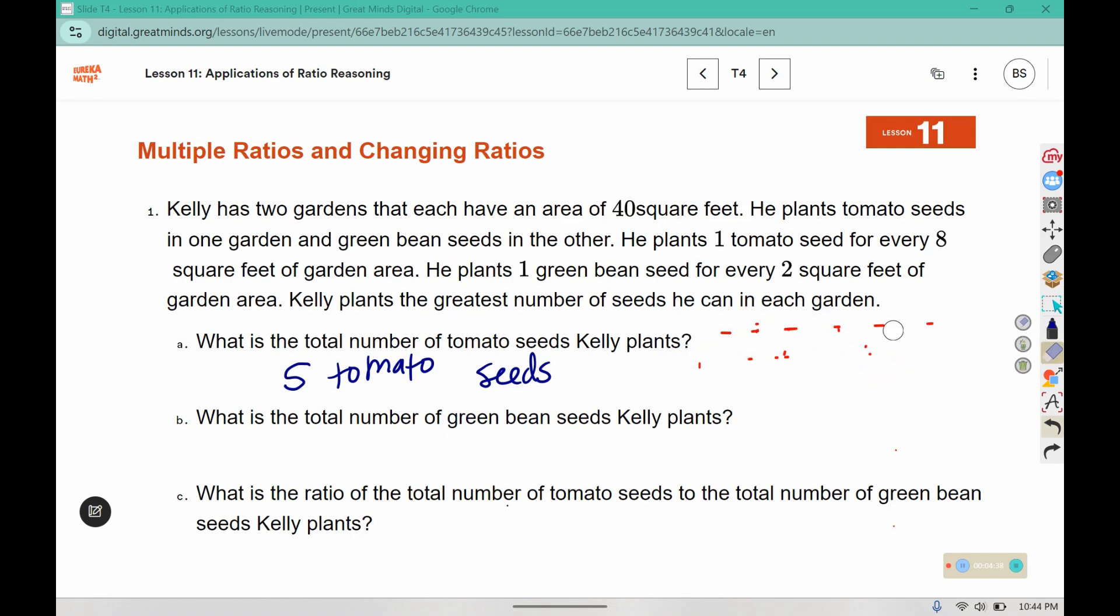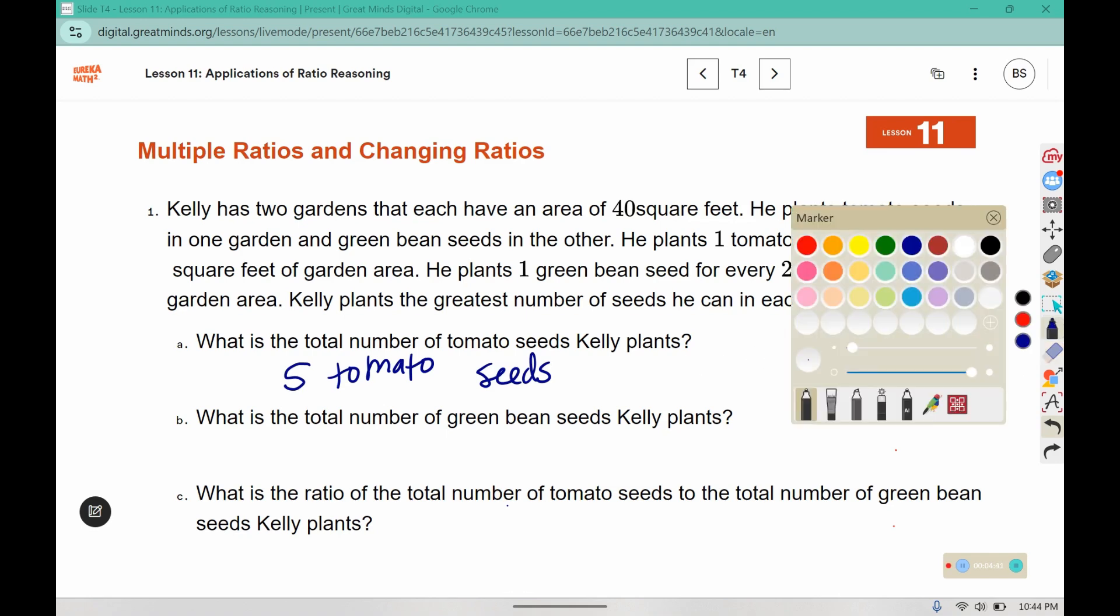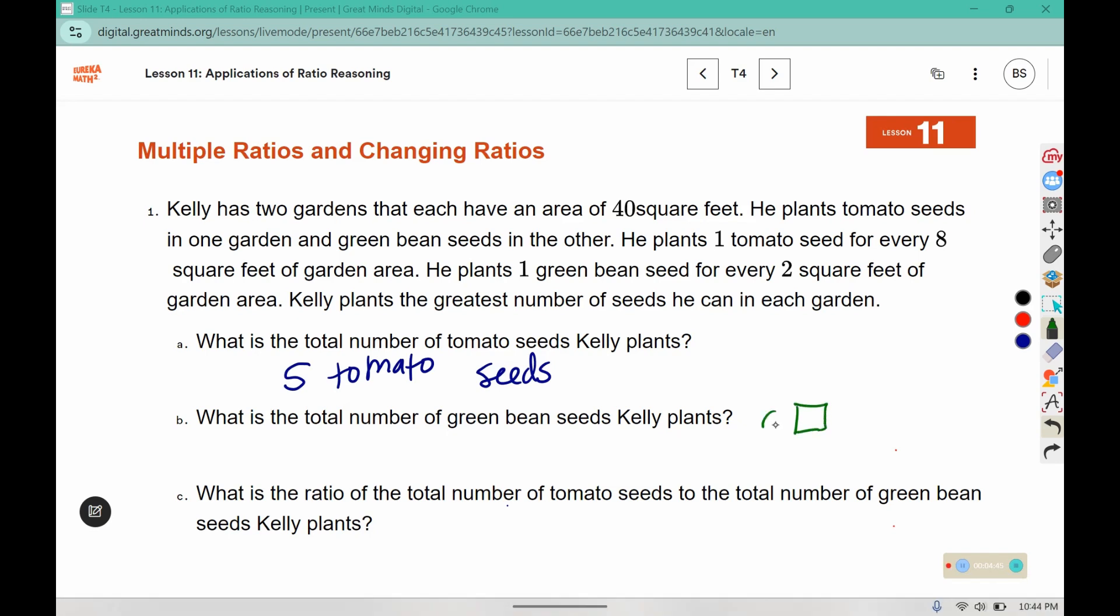Now we're going to look at how many green bean seeds he plants. He plants one green bean seed for every two square feet, and we know that the square feet in the garden is 40. Well, 40 split into two parts is 20, so he plants 20 green bean seeds. What is the ratio of the total number of tomato seeds to the total number of green bean seeds? This can be written as 5 to 20, or we can reduce it to 1 to 4, because 1 times 5 is 5 and 4 times 5 is 20.